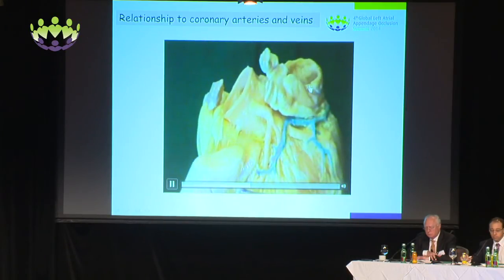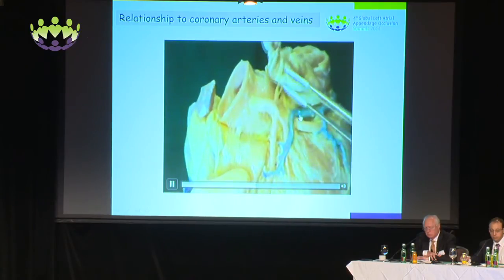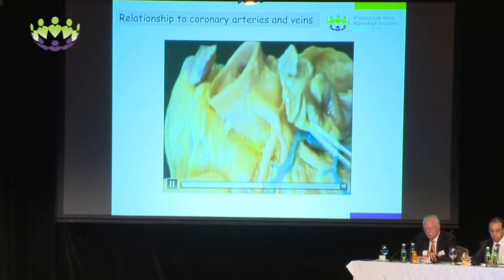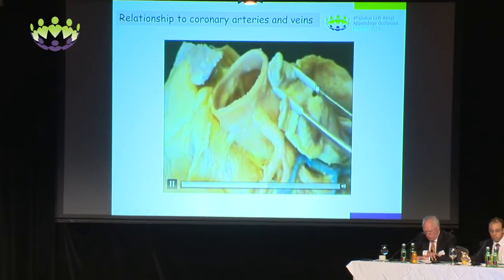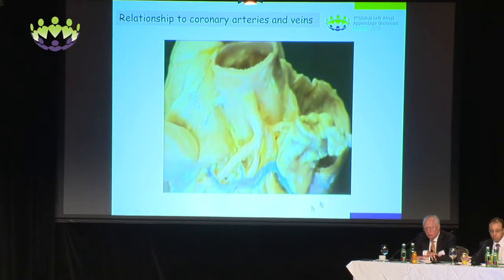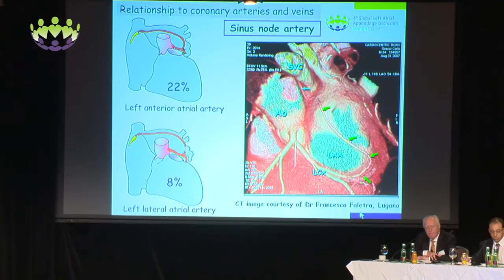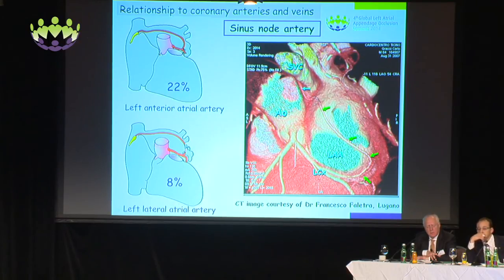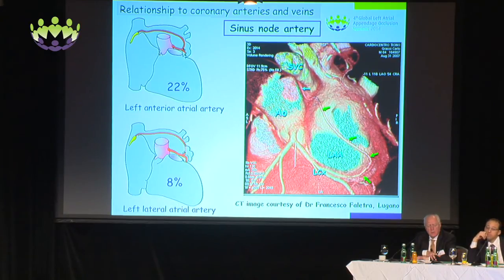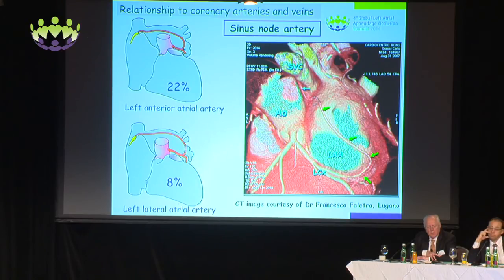Rotating further around, we can see the os of the left atrial appendage just here, peeling backwards. There's a little artery which, in this case, is the artery supplying the sinus node. The sinus node artery, when it comes from the left system, can come around to the back of the left atrial appendage, surrounding the back of the neck or os area, or tracking across the top of the left atrial roof. Or it can — in the majority when coming from the left system — come in front of that left atrial appendage os. This is an example of CT imaging from Dr. Faletra from Lugano, showing the retro course of this sinus node artery behind the os of the appendage, running in the region of the left atrial ridge.